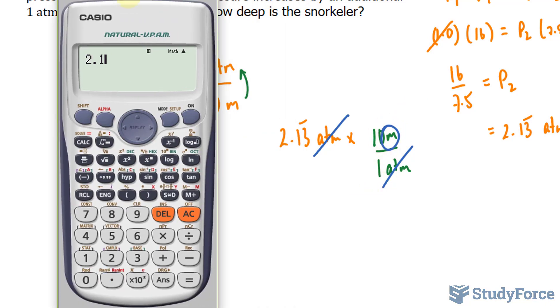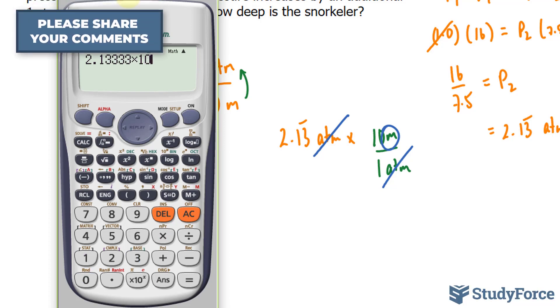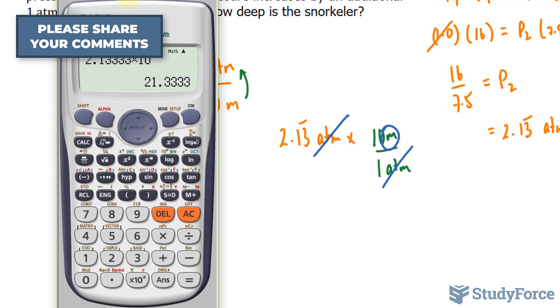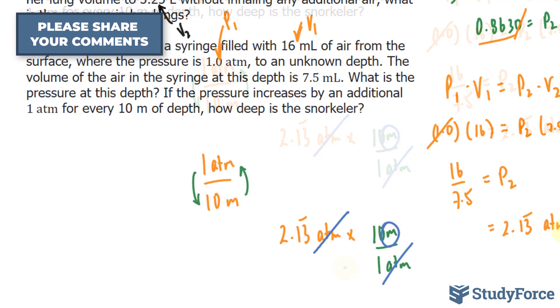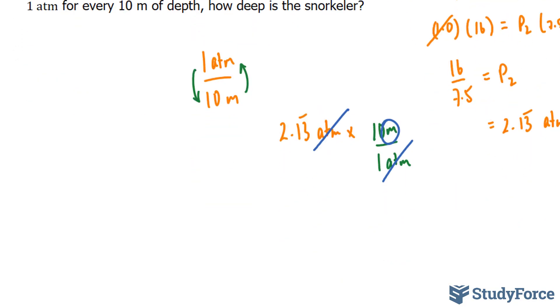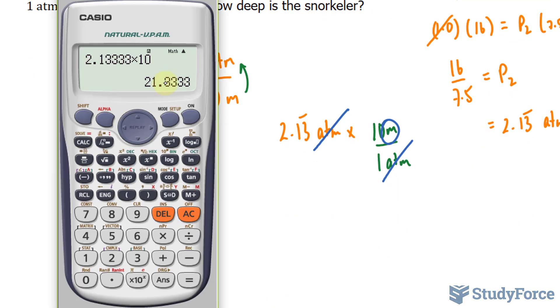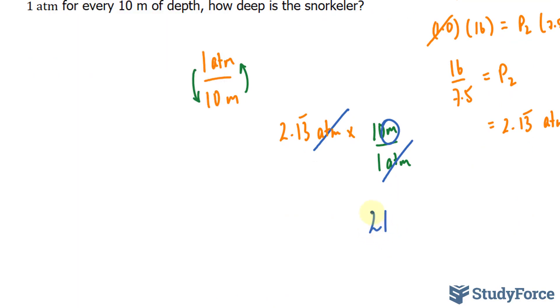So 2.1333 repeating, that's good enough, times 10 gives us 21.3. And since we started with two significant figures, we should also end with 2. The last digit should be discarded, therefore the answer is 21 meters deep. That's how far the snorkeler is diving.